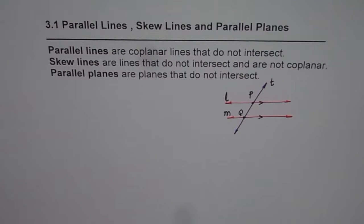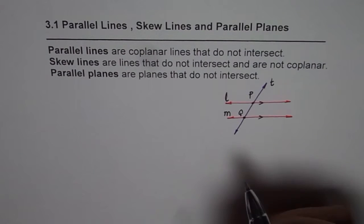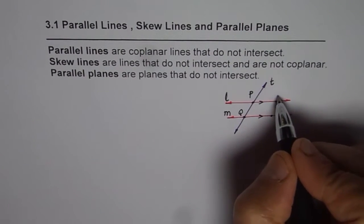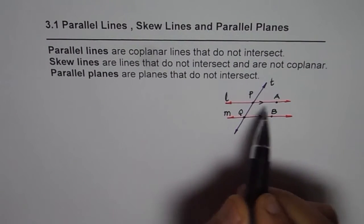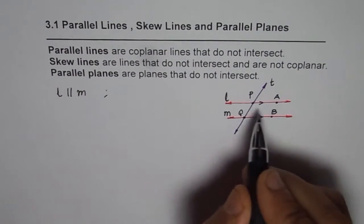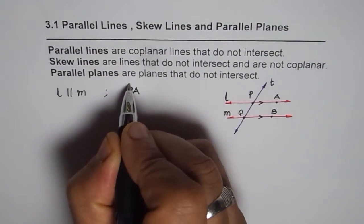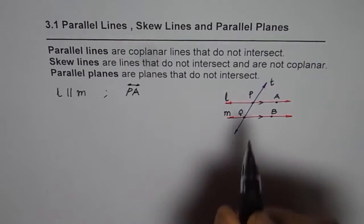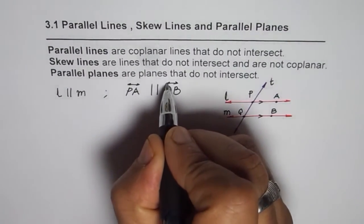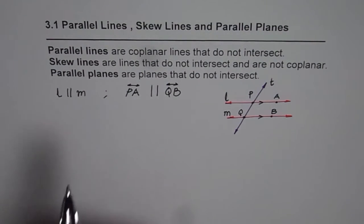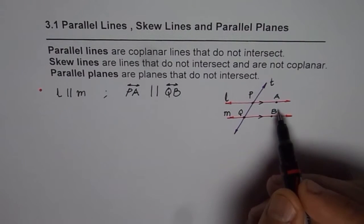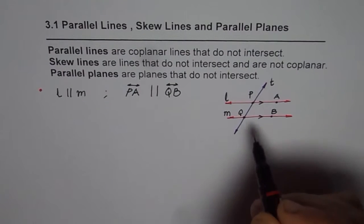We have a transverse line cutting across these two parallel lines at points P and Q. I could also label the lines with the help of two points — let us say we have another set of points A and B on the line. Then we can say line L is parallel to line M. That symbol is for parallel lines. We could also say line PA is parallel to line QB, where the double-headed arrow on top indicates lines.